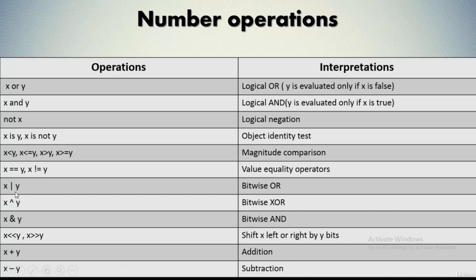Next we have bitwise OR — you can apply this over bitwise numbers. If you have two bitwise numbers x and y and apply the OR operation over them, it is called bitwise OR. Similarly, we have bitwise XOR, bitwise AND, left shift, and right shift — all of which are applied over bits.